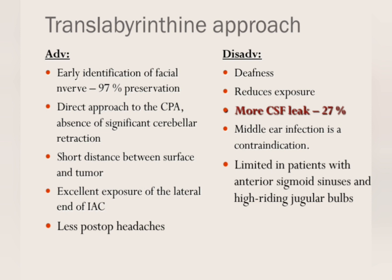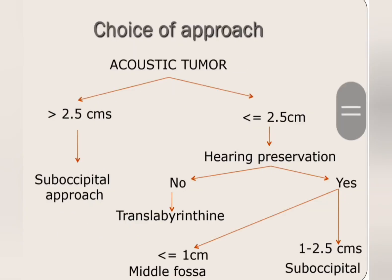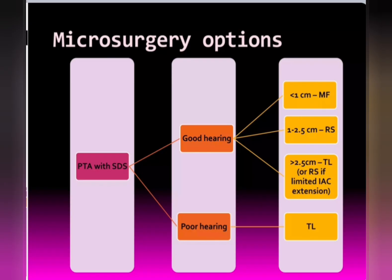The trans-labyrinthine approach gives excellent exposure of the lateral end of the IAC. If tumours are very large — more than 2.5 cm — a suboccipital or retrosigmoid approach is done. If tumours are less than 2 cm and you want to preserve hearing, you can do middle fossa or suboccipital approach. But if hearing is already non-serviceable, then trans-labyrinthine approach is appropriate. These days, even large-sized tumours are handled with trans-labyrinthine approach when hearing is poor.